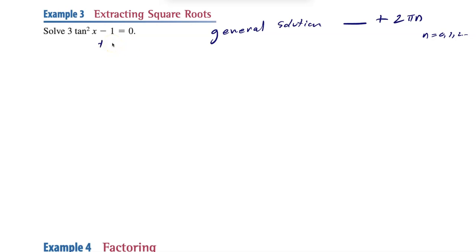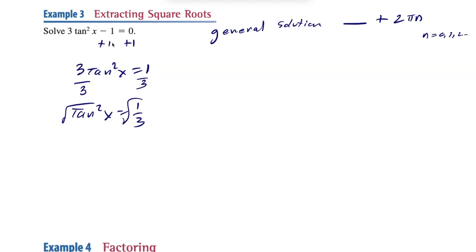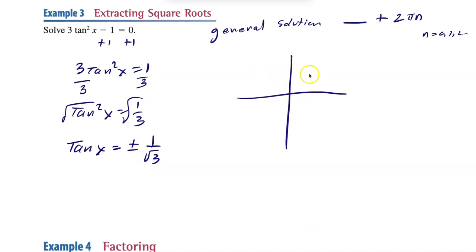For 3tan²x − 1 = 0: add 1 to both sides to get 3tan²x = 1, divide by 3 to get tan²x = 1/3, then take the square root. Remember, when you square root, it's plus or minus. We get tan x = ±1/√3, which simplifies to ±1/√3. Since it's plus or minus, we're going to draw triangles in every single quadrant.